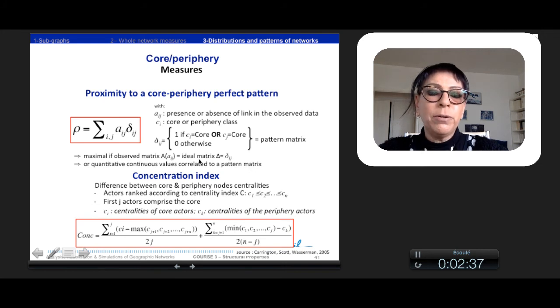Another measure is the measure of a concentration index. So we differentiate the core and periphery node centralities. So the actors are ranked according to their centrality index, C1, C2, and so on. And so this is the ranked C1 according to their centrality, and so the first G-actors comprise the core.